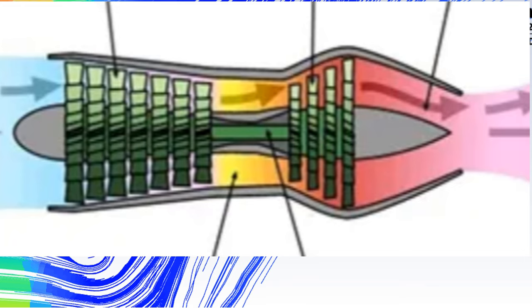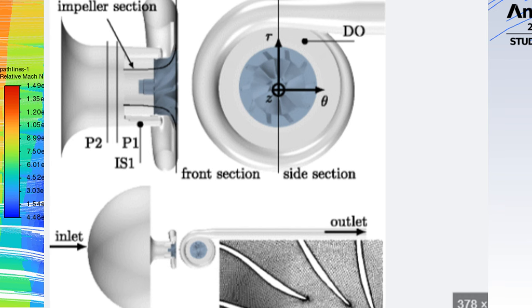Eleven: the axial flow compressor has a small frontal area for the same mass flow rate, while centrifugal flow compressor has a large frontal area for the same mass flow rate.